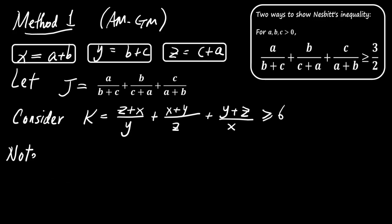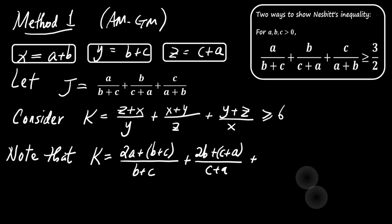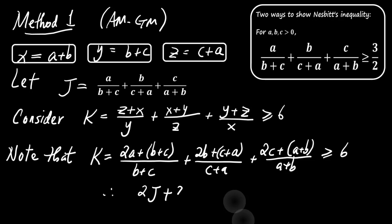Now, we relate K to J. K equals 2 times J plus 3. Since K is greater than or equal to 6, we get J is greater than or equal to 3 over 2.